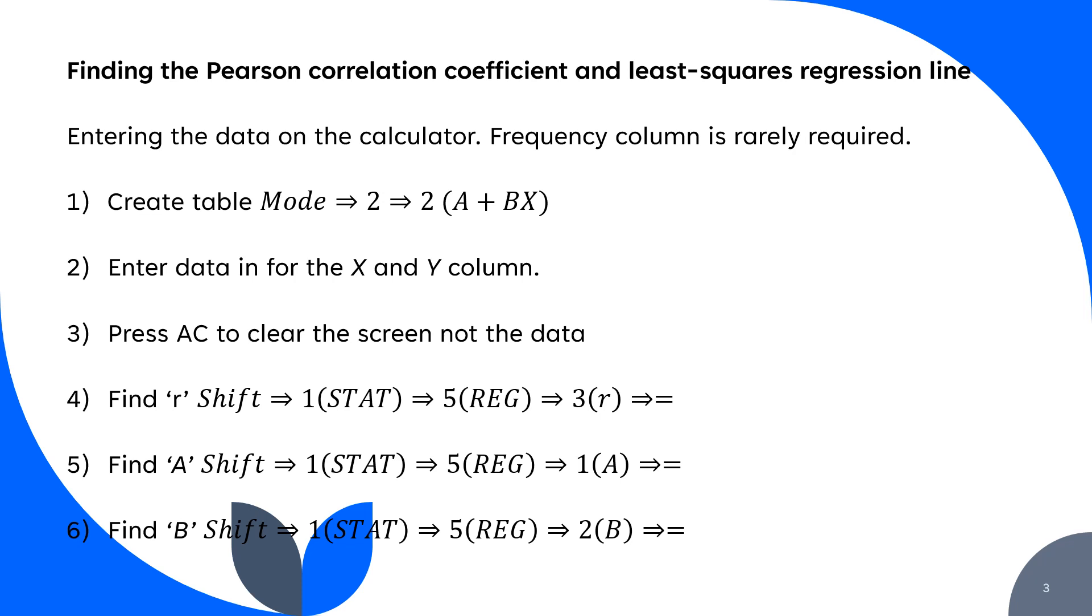You then press AC. It clears the screen, not the data. To find R, your correlation coefficient, you press shift 1, that's your stat button, 5 for regression. Some calculators might be different there. 3 for R and then equals.